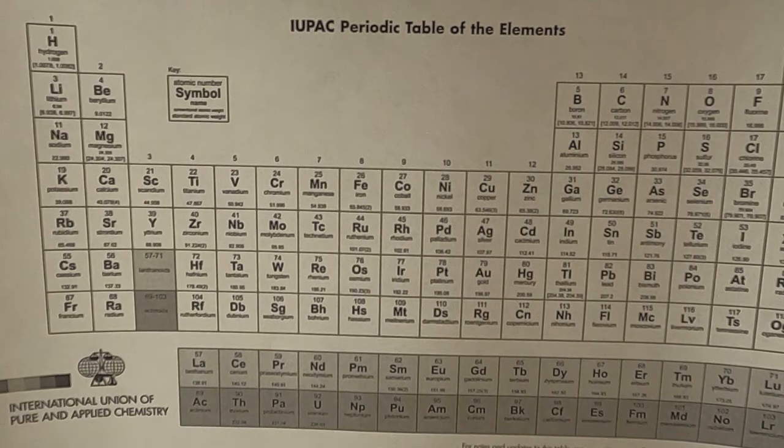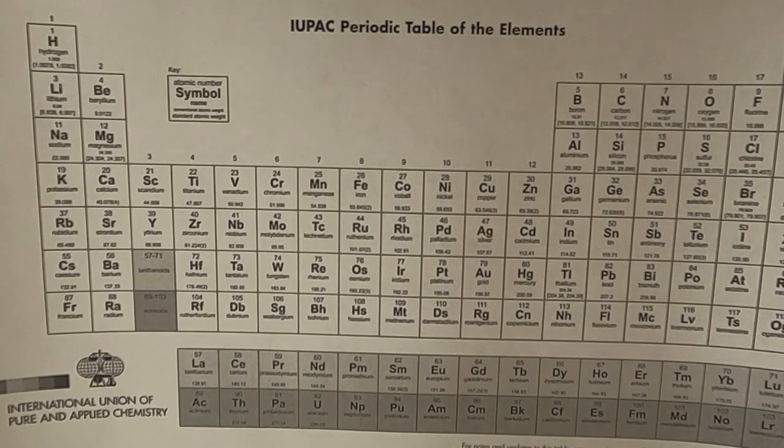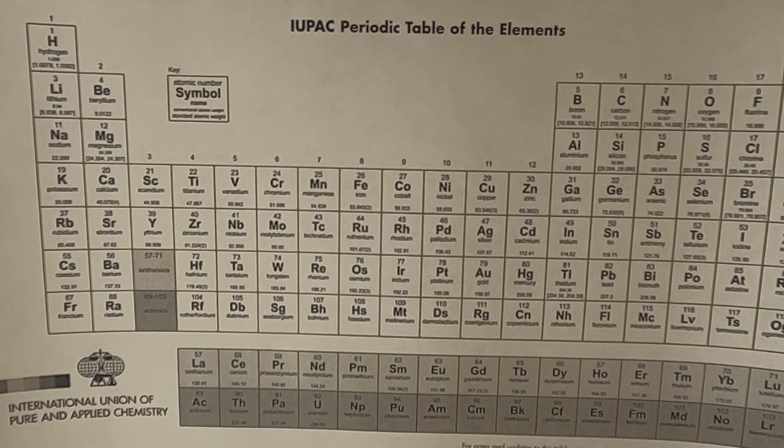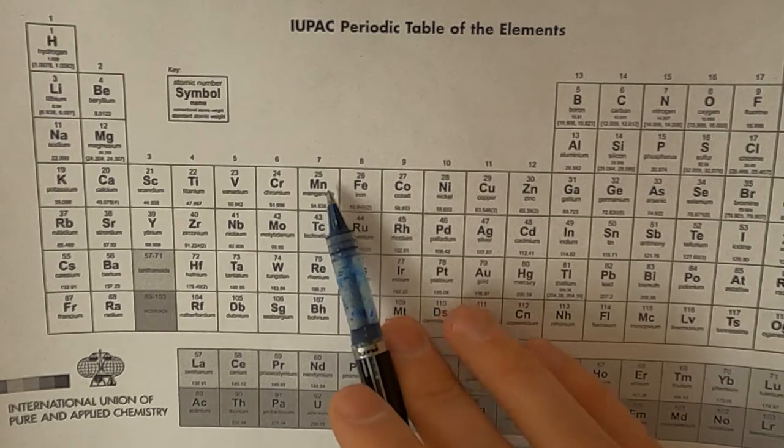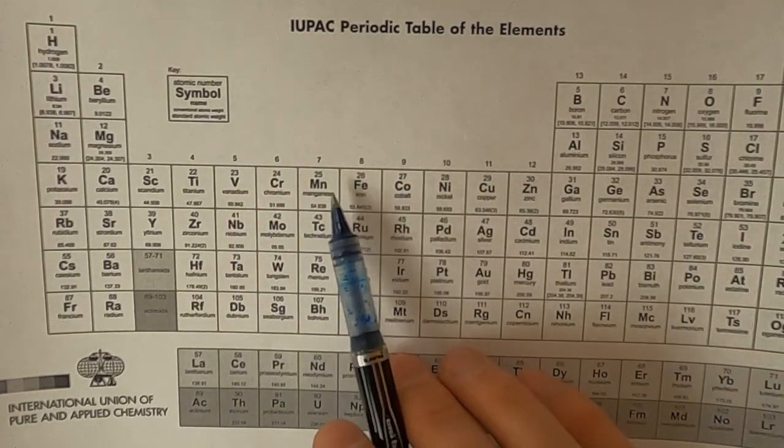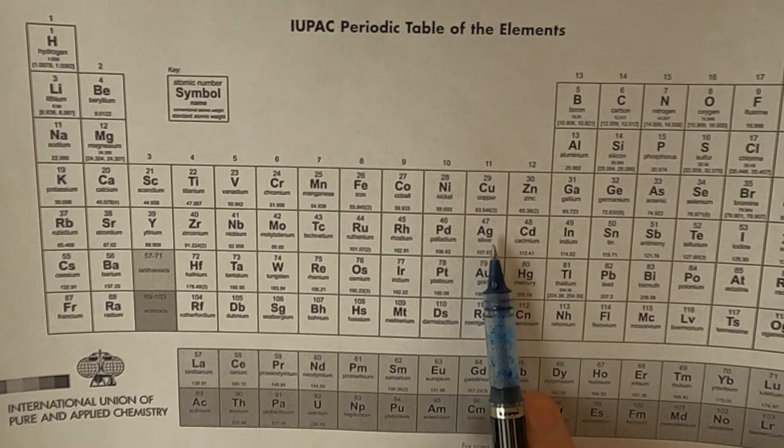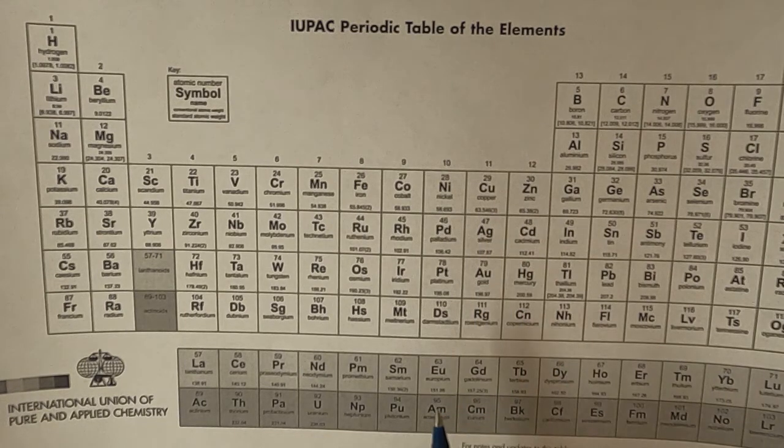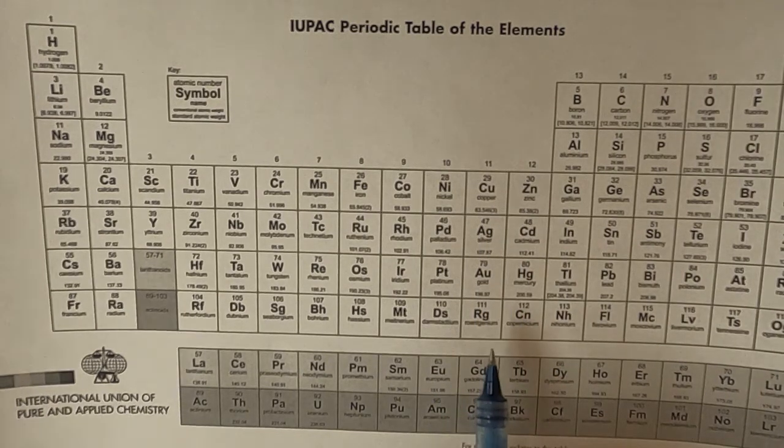Now the reason why we're doing this lab in our unit on the periodic table, elements, and electron configurations is that manganese, and indeed most d-block metals except for things like silver, zinc, and a few others, are what are called transition metals.